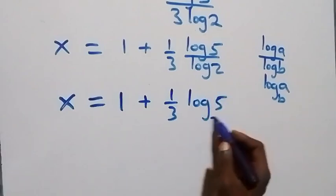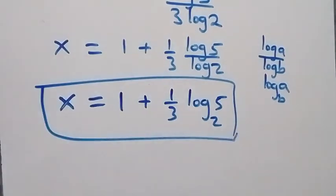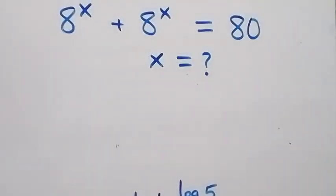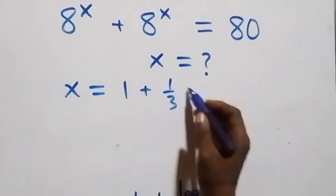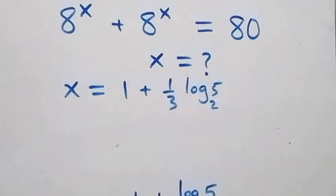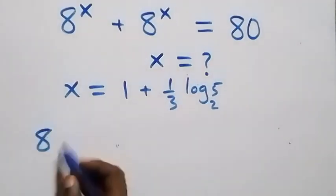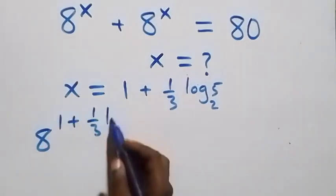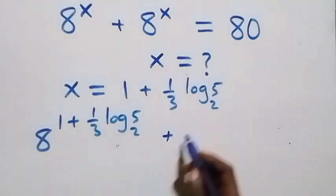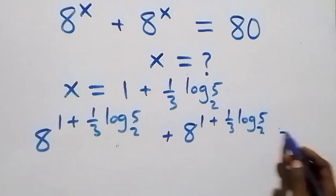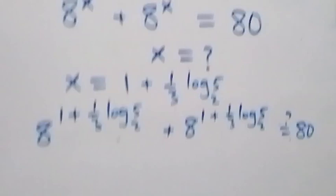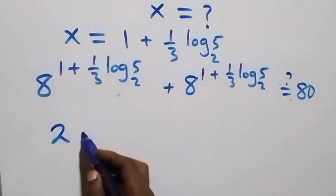Now let's verify this satisfies the original problem. We substitute x equals 1 plus (1/3)·log base 2 of 5. This gives 8 raised to power (1 + (1/3)·log₂5) plus 8 raised to power (1 + (1/3)·log₂5) equals 80. Since the two terms are identical, we write it as 2 times 8 raised to power (1 + (1/3)·log₂5) equals 80.